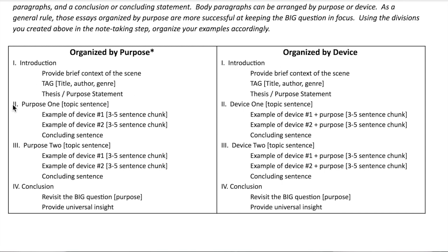There are two ways you could organize your essay — by purpose or by device. If you organize by purpose, in body paragraph one you talk about purpose number one and two devices that connect to it, and in body paragraph two you talk about purpose number two with its devices. The other way is to organize by device — discuss one kind of device like diction or allusion, give examples connecting it to the purpose, then pick a different device and do the same thing. It depends on where you feel strongest.